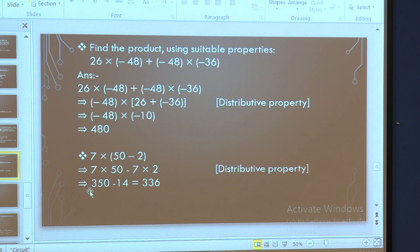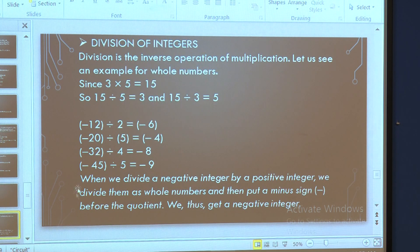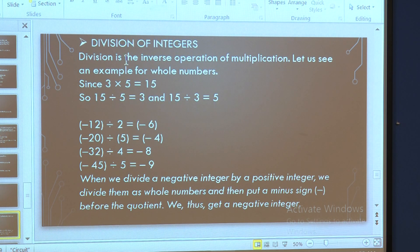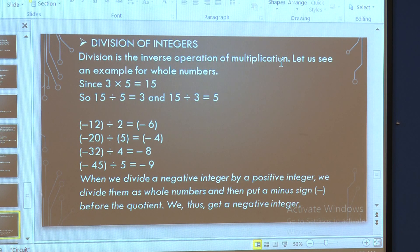Similarly, you can solve many different types of examples by taking your own integers. Now that everyone has understood multiplication of integers, we will go on to division of integers. Today we have learned about multiplication of integers. The last property we will cover is division of integers. Division is the inverse operation of multiplication.